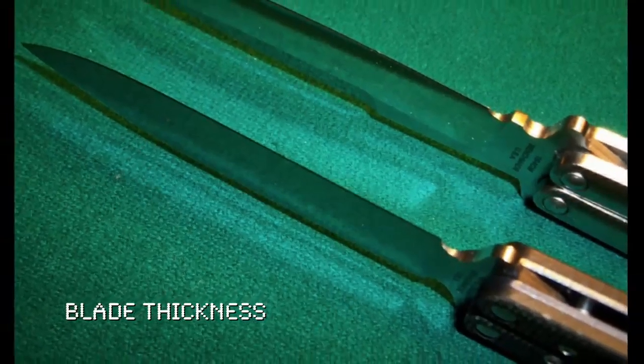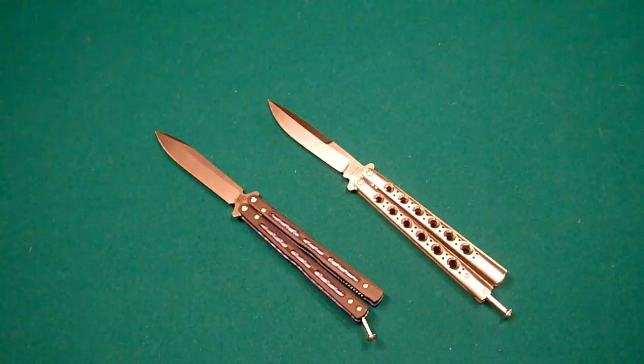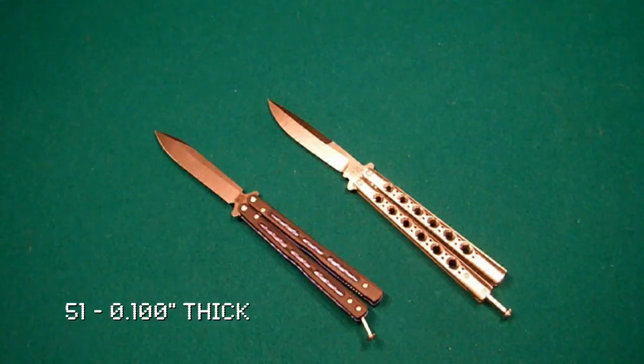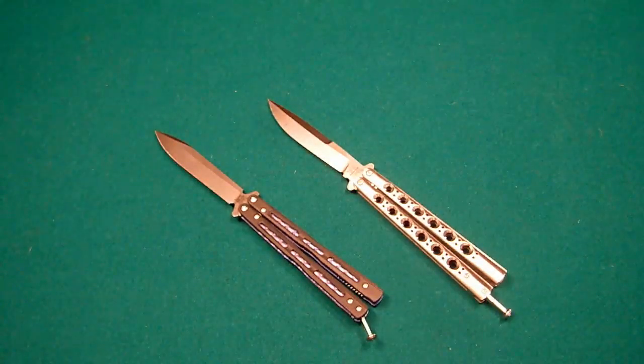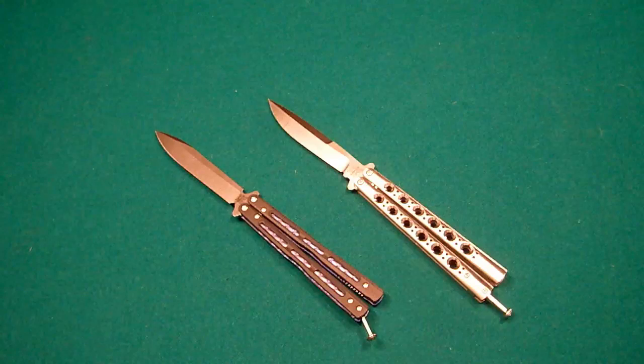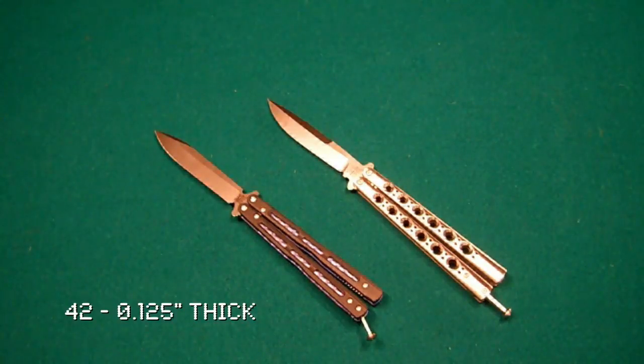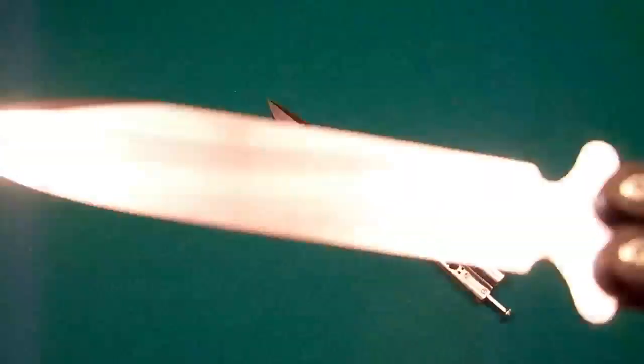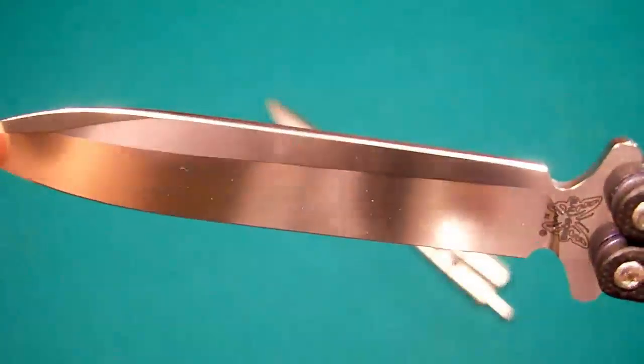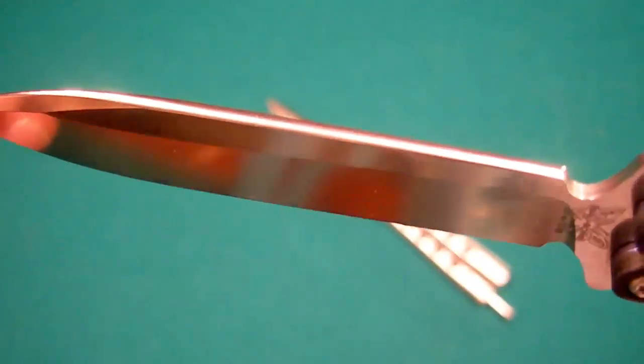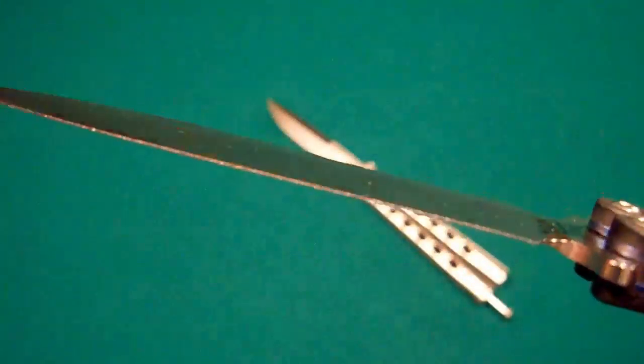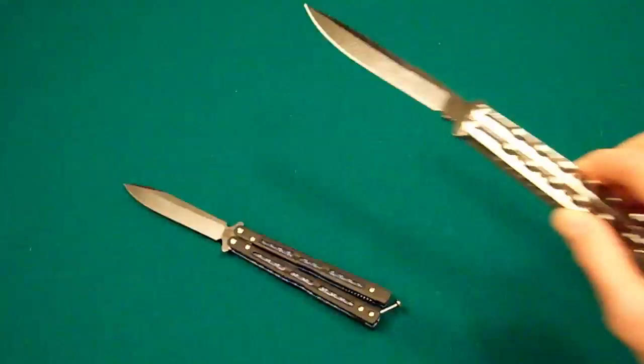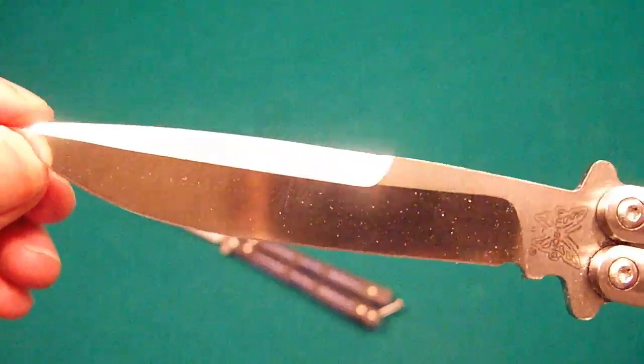We now go on to the blade thickness. The blade thickness is fairly similar. The 51 is 0.100 inches thick, whereas the 42 is 0.125 inches thick. So not much difference there. I'll give you a little look at that. There's the blade there, the 51, and of the 42.